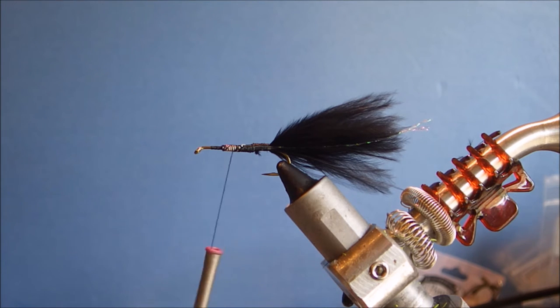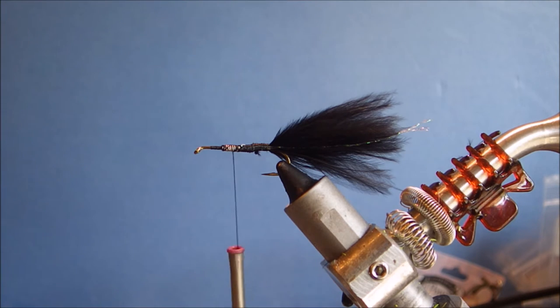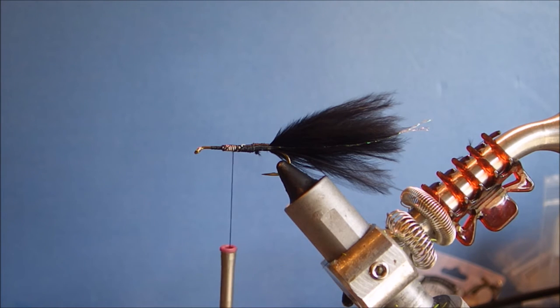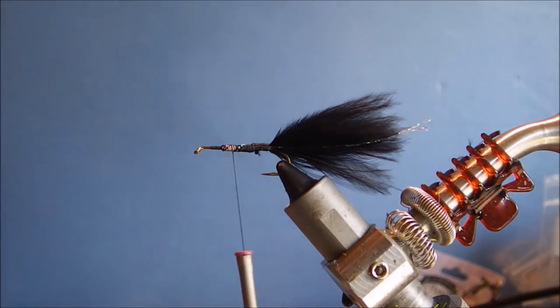So I'm going to tie in a rib. If you're palmering a hackle you should always rib it. I see a lot of videos, a lot of guys tie, well they just tie the hackle in by the tip and then wind it forward. It's quicker and it's easier, but your fly is much less durable. It just doesn't last as long.